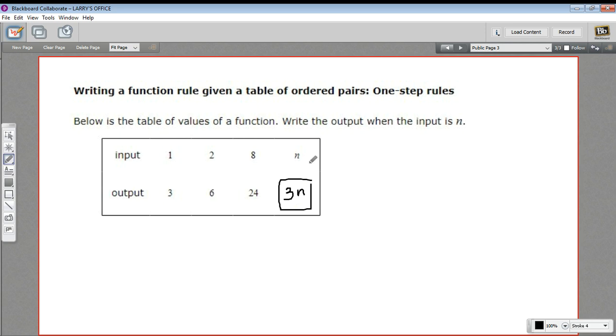So the function now is any number N you put in, you get out three times N. So that is how to write a function rule when you've got a table of ordered pairs like this.